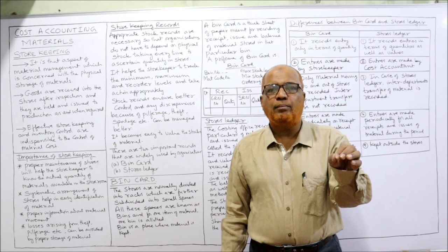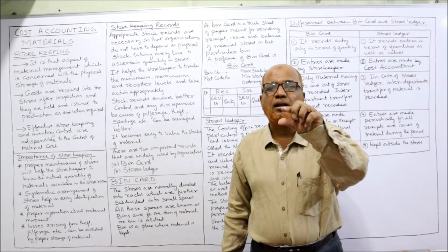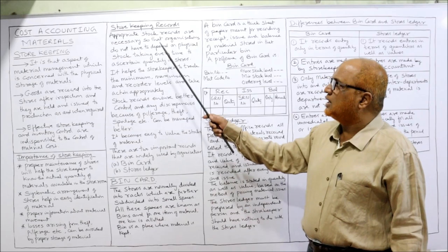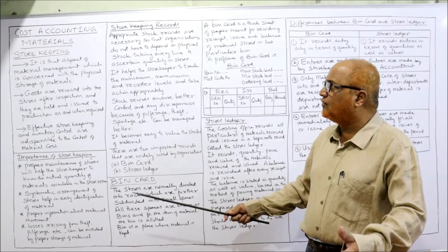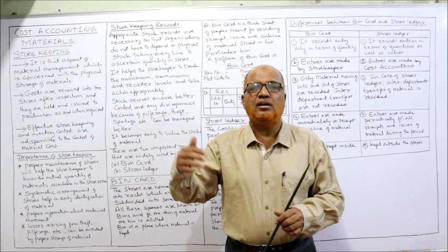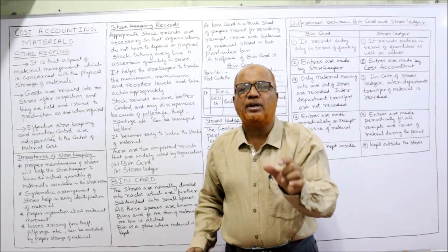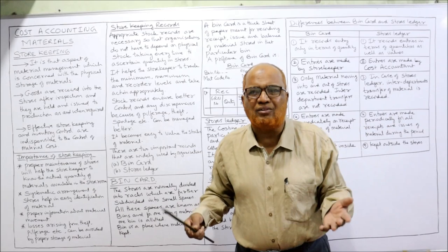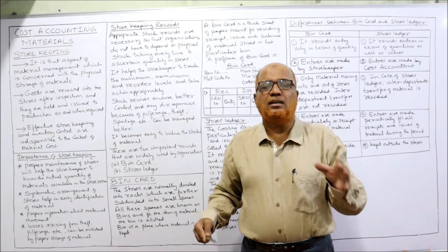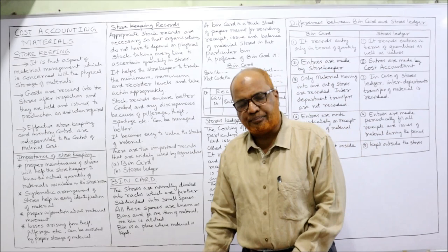Regarding store keeping records — proper records are necessary so that the organization does not have to depend on physical stock taking every time to ascertain the quantity in stores. Without store records, physical stock taking would have to be done after every receipt and issue of material, which is a very tedious activity. To avoid this, management must keep proper records so the balance can be known at any time. Records help the storekeeper track minimum, maximum, and reorder levels and act appropriately.